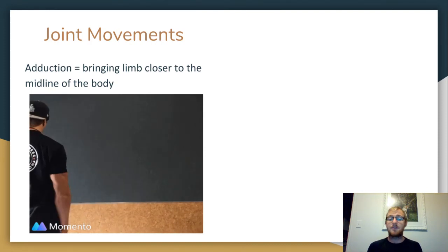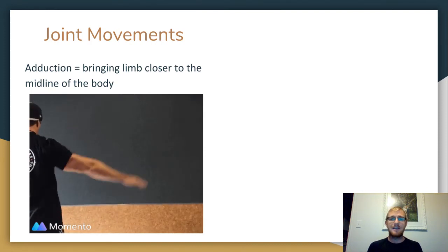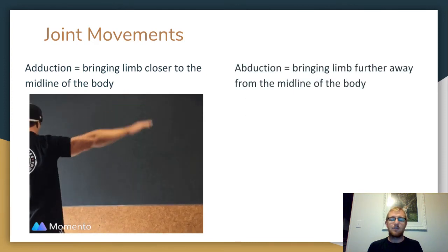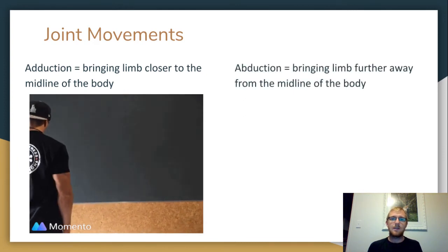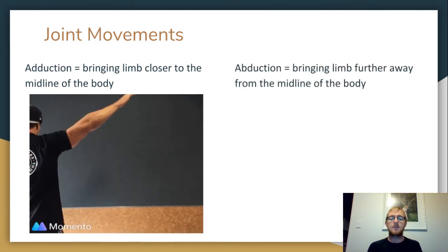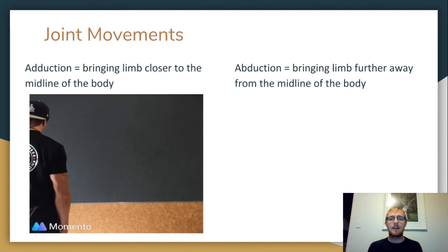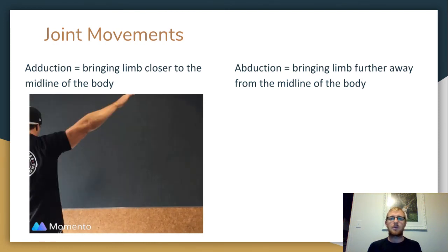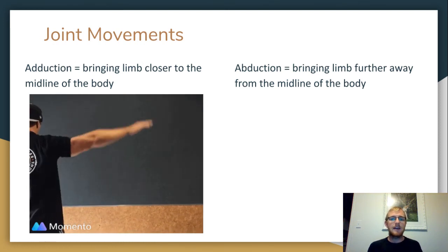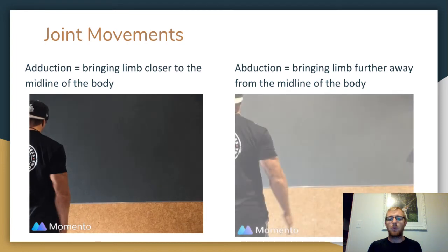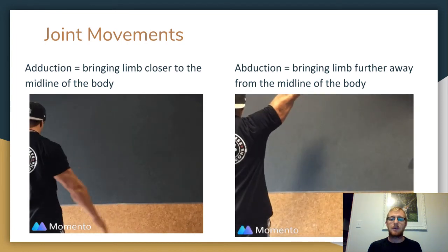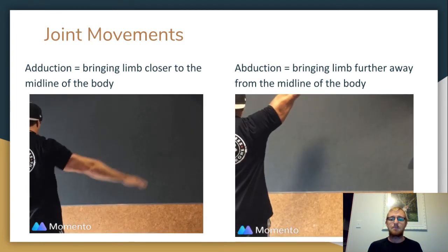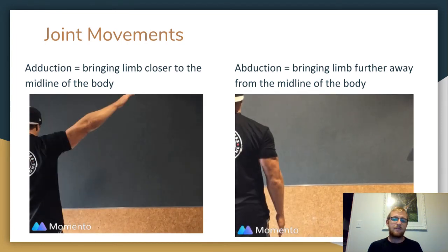The opposite of adduction is abduction — like aliens. If you abduct something, you take it away. So this is the opposite: bringing a limb away from the midline of the body. It starts closer to the midline and then is pulled away by your muscles. We can see here — it's close by the side, and it's pulled far away.